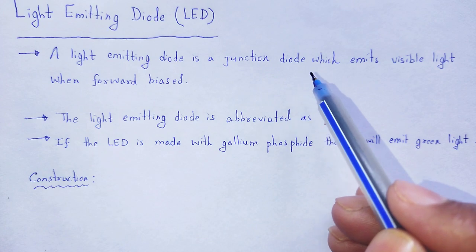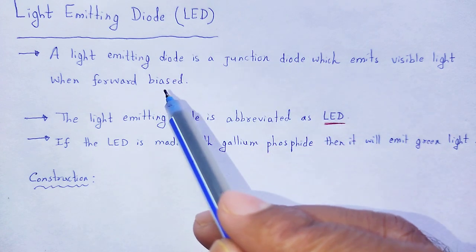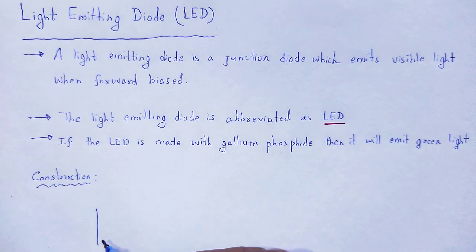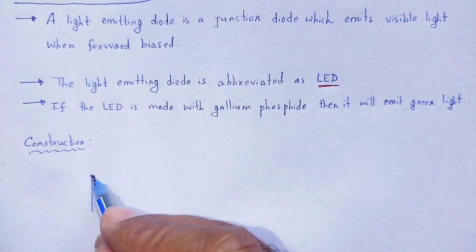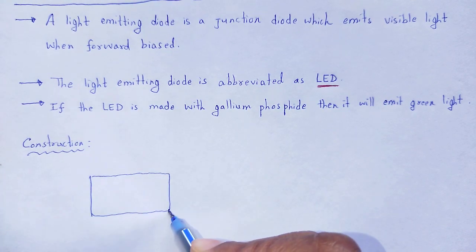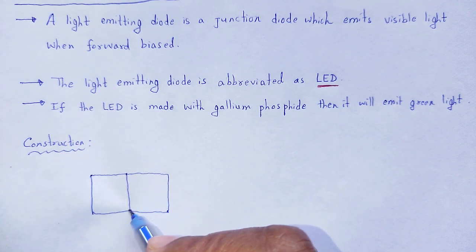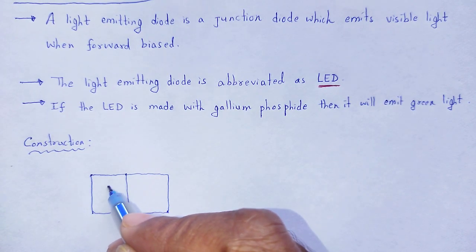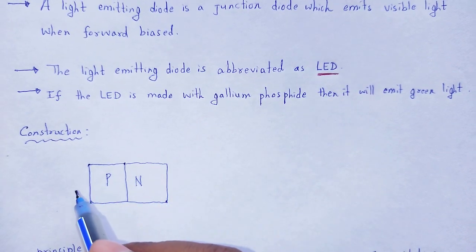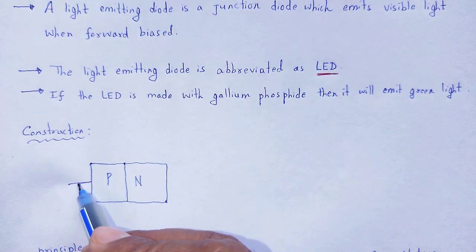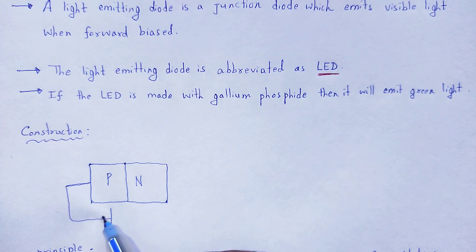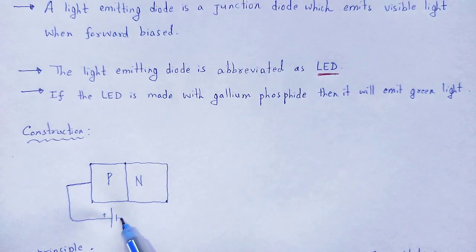Construction. It is a junction diode which is forward biased. It has a P-type semiconductor and an N-type semiconductor. In forward bias, the P-type is connected to the positive terminal and the N-type is connected to the negative terminal.